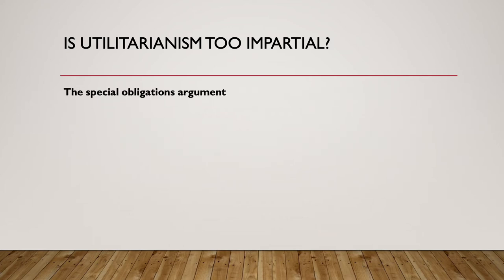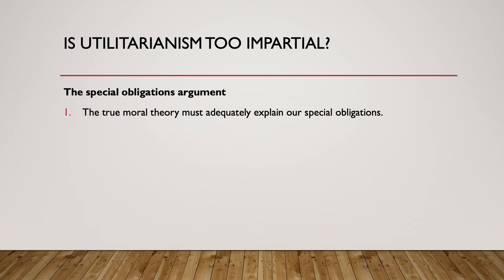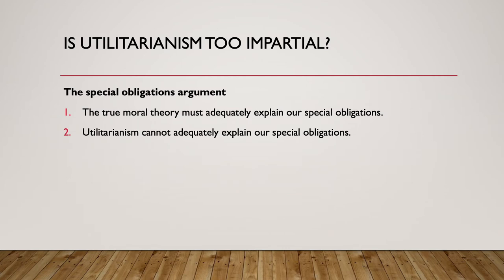Special obligations are moral obligations that we owe to some smaller group of people due to a special relationship between us, as opposed to obligations we owe to all persons simply as persons. The special obligations argument runs: premise one — the true moral theory must adequately explain our special obligations. Premise two — utilitarianism cannot adequately explain our special obligations to our children, friends, family, etc. Therefore, utilitarianism cannot be the true moral theory.